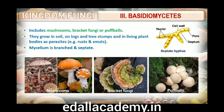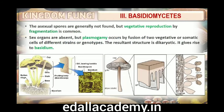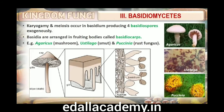Third are basidiomycetes. Commonly known forms are mushrooms, bracket fungi or puffballs. They grow in soil, on logs and tree stumps, and in living plant bodies as parasites — for example, rusts and smuts. The mycelium is branched and septate. Asexual spores are generally not found, but vegetative reproduction by fragmentation is common. The sex organs are absent, but plasmogamy is brought about by fusion of two vegetative or somatic cells of different strains or genotypes. The resultant structure is dikaryotic, which ultimately gives rise to basidium. Karyogamy and meiosis take place in the basidium, producing four basidiospores. The basidiospores are exogenously produced on the basidium (plural basidia). The basidia are arranged in fruiting bodies called basidiocarps. Some common members are Agaricus (mushroom), Ustilago (smut) and Puccinia (rust fungus).